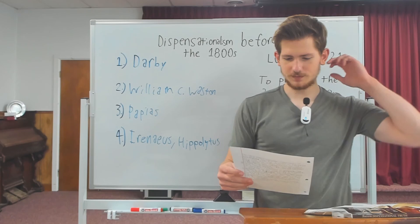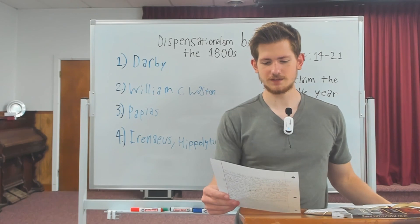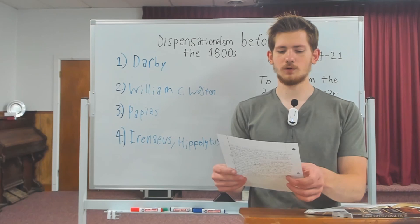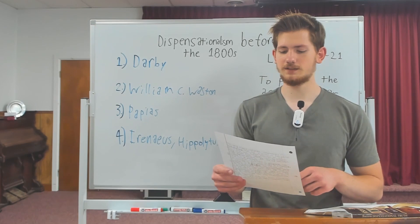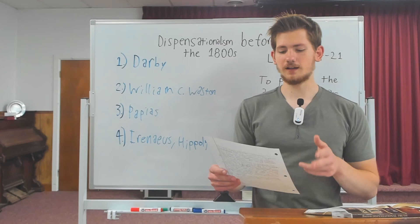William C. Watson published a study in 2015 in which he traced a very large number of dispensational concepts, including a few cases of full dispensationalism, that were published in the English language long before the 1800s. This study mainly covered a period of 150 years following the publication of the King James Bible, which came out in 1611.